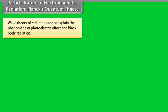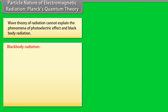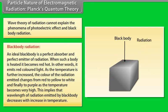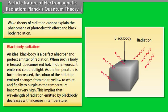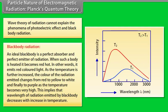Particle nature of electromagnetic radiation — Planck's Quantum Theory: Wave theory cannot explain the photoelectric effect and black body radiation. An ideal black body is a perfect absorber and perfect emitter of radiation; when heated it becomes red hot, then emits radiation changing from red to yellow to white to purple as temperature increases. The wavelength of radiation emitted decreases with increasing temperature. At a given temperature, intensity increases with decreasing wavelength, reaches a maximum, then decreases further.